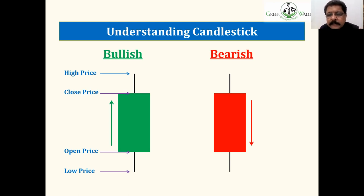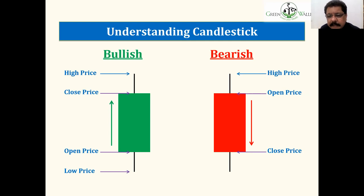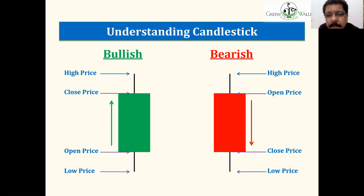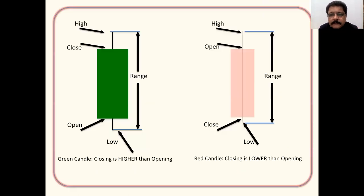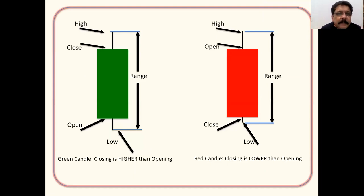The red arrow comes down: the opening was high and the closing was low. This was the open price, this was the close, this was the day high, and this was the day low. When we refer to a candlestick we know all four dimensions. In the line chart we only know the closing price — we don't know how much the share went up or down. The total range of the candle is from the low to the high.